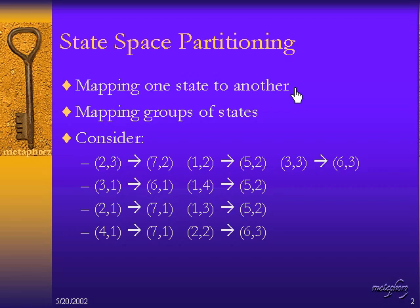In production systems, we can map one state to another, or, which is more valuable, we can map groups of states. We can map one group of states to another group of states.